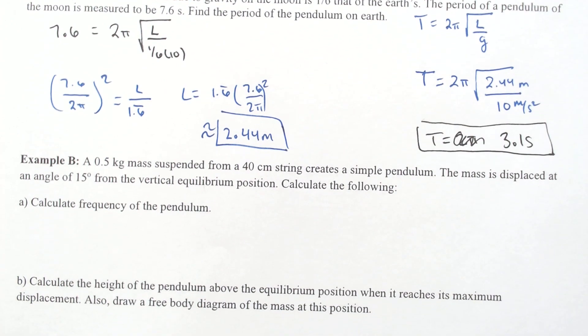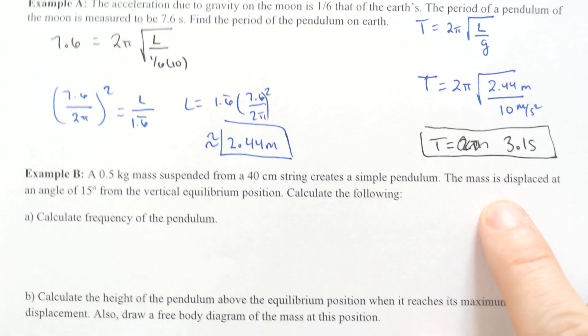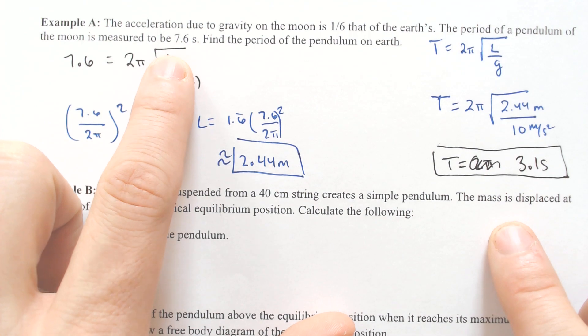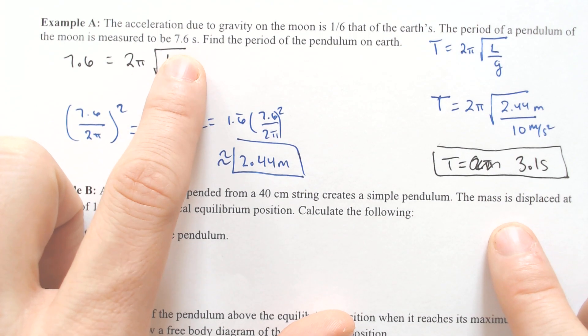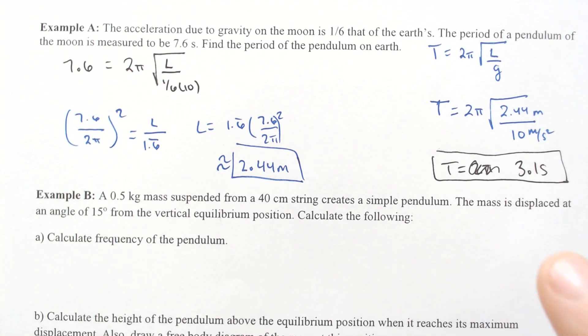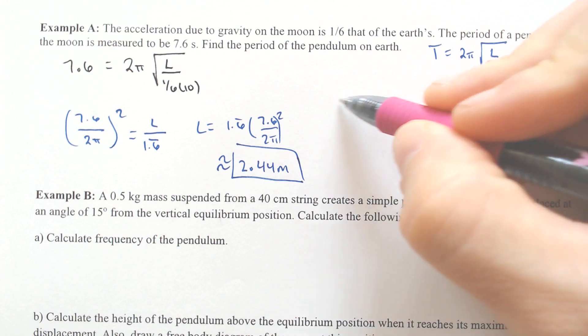So which one took longer? Well, the moon took longer because gravity was affecting it less, so it would take a little bit longer to go up and then back down.